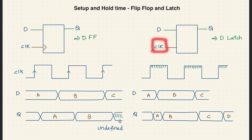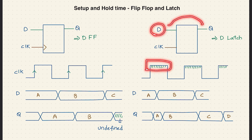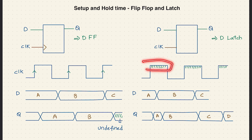For a latch, it is level triggered. Taking a positive level triggered latch as an example, whenever the level is positive, whatever changes happen in the input D will be propagated to Q. It can also be negative level triggered.